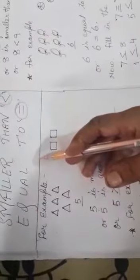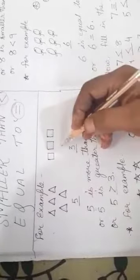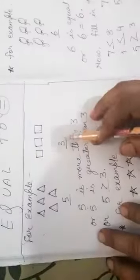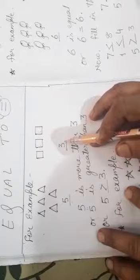Taking an example, here 5 triangles has been drawn and 3 squares has been drawn. So, number of triangles and number of squares, how many? 5 triangles and 3 squares. So, you can say 5 is more than 3 or 5 is greater than 3. By indicating symbol, 5 is greater than 3.